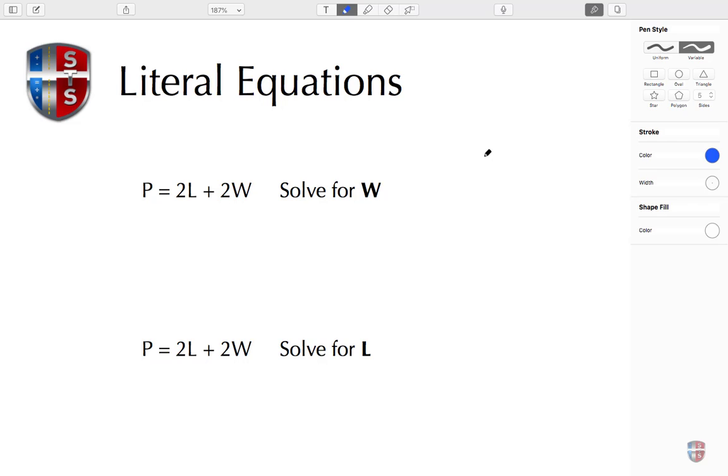Welcome back. We're going to continue with literal equations. This literal equation is the formula for the perimeter of a square or rectangle. We have the formula, and it's saying that we need to solve for W.